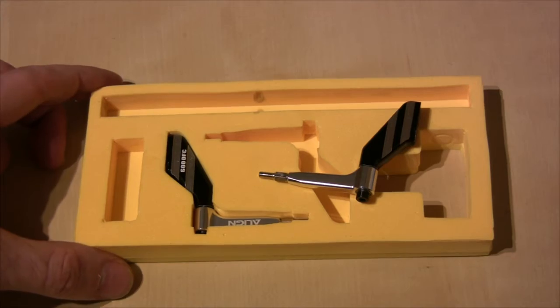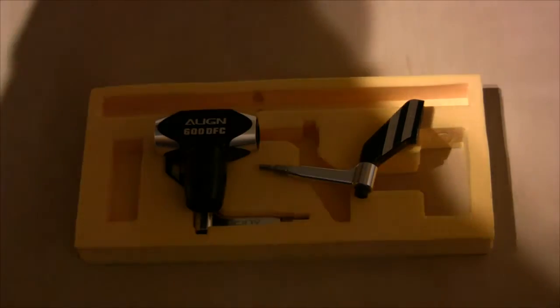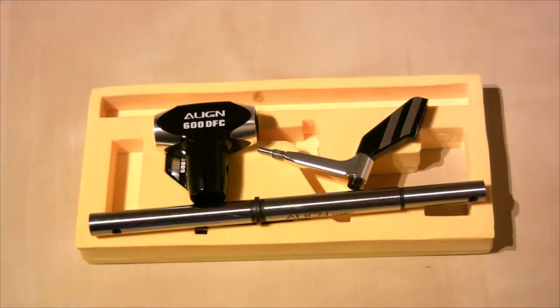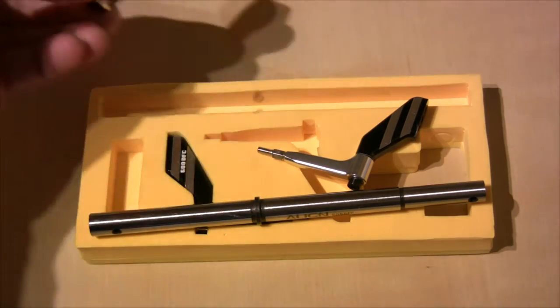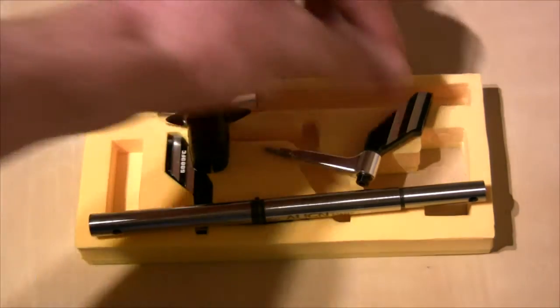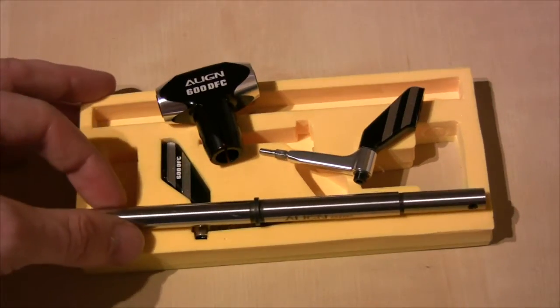Really just these two arms, the head, and the new main shaft. I don't think it's going to be that interesting to do a build video of this because there's really not a lot to build. It's just bolting these arms onto the blade grip and installing a new head block and main shaft.